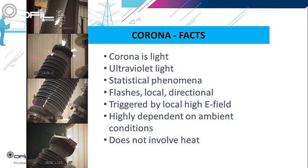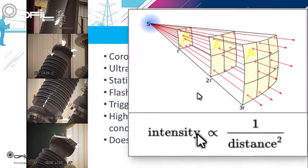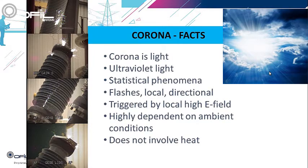Corona is light, so all the laws of physics apply — in particular, attenuation. The intensity of light observed from a corona source declines as the square of the distance from the object. Thus, by doubling the distance to a light source, the observed intensity declines to one-fourth of its original value. Scattering is another property of light to consider.